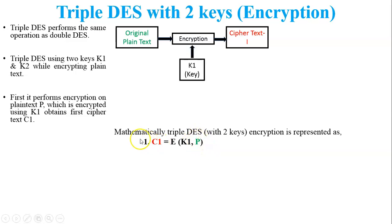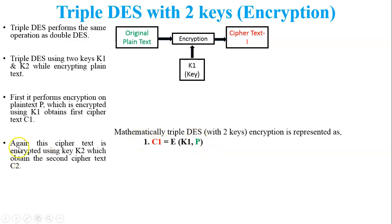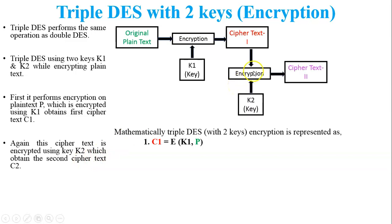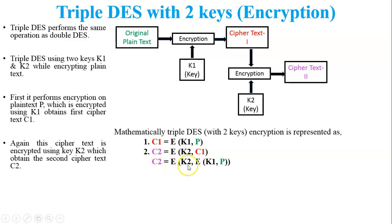Next, ciphertext C1 is encrypted using key K2 to obtain the second ciphertext C2. In the figure, the second encryption process takes inputs C1 and K2, generating C2. Mathematically: C2 = E(K2, C1). Substituting C1 from equation one: C2 = E(K2, E(K1, P)).